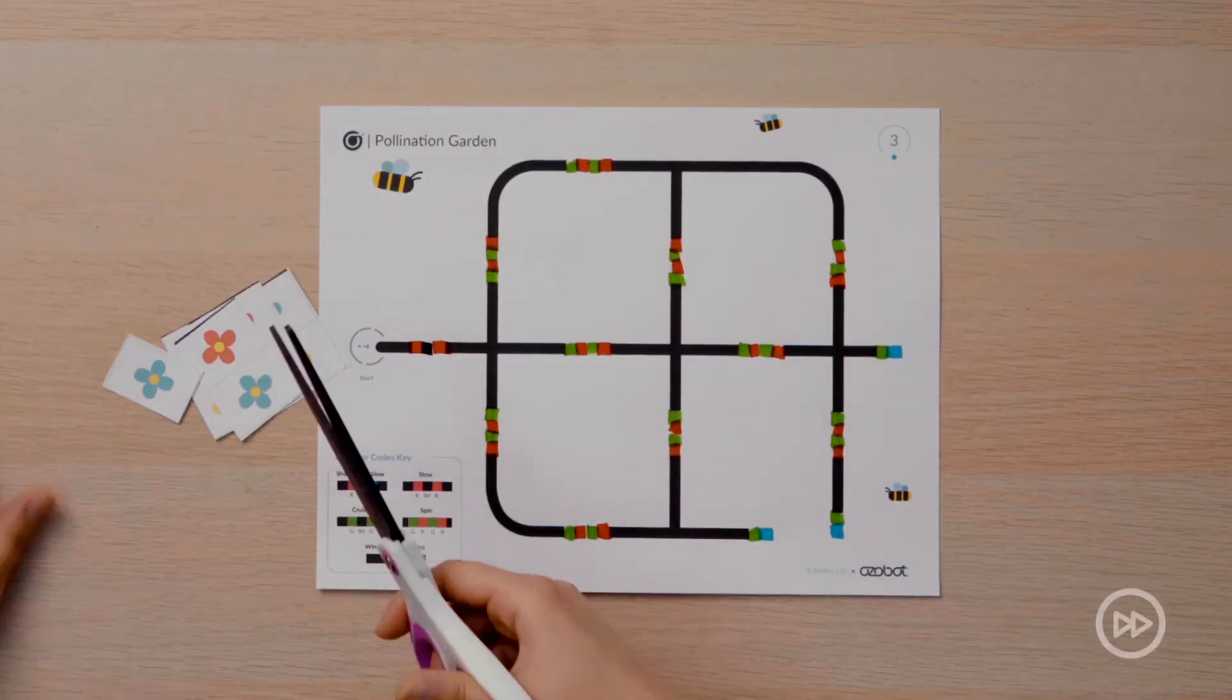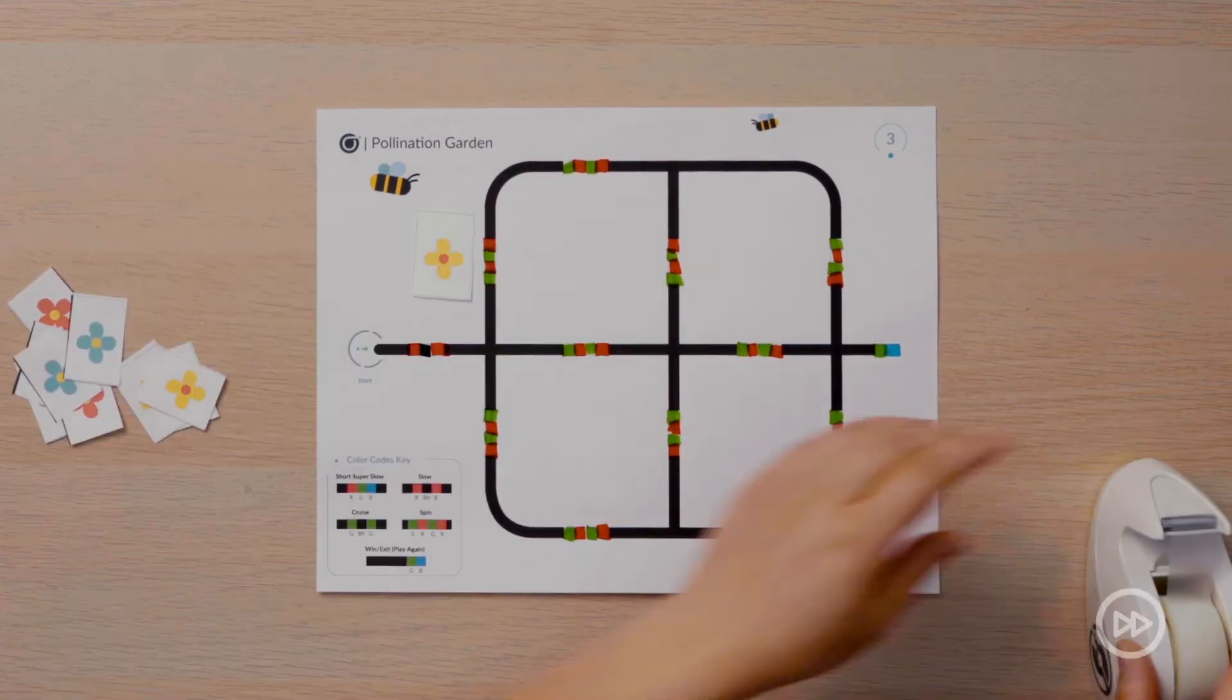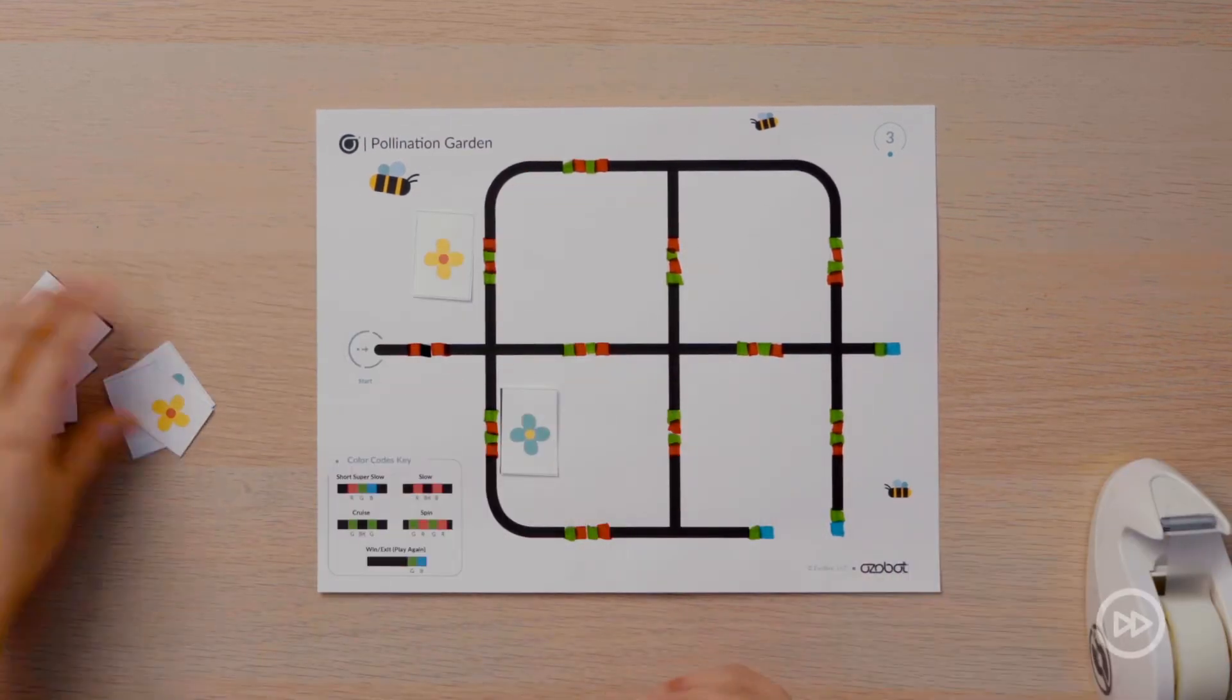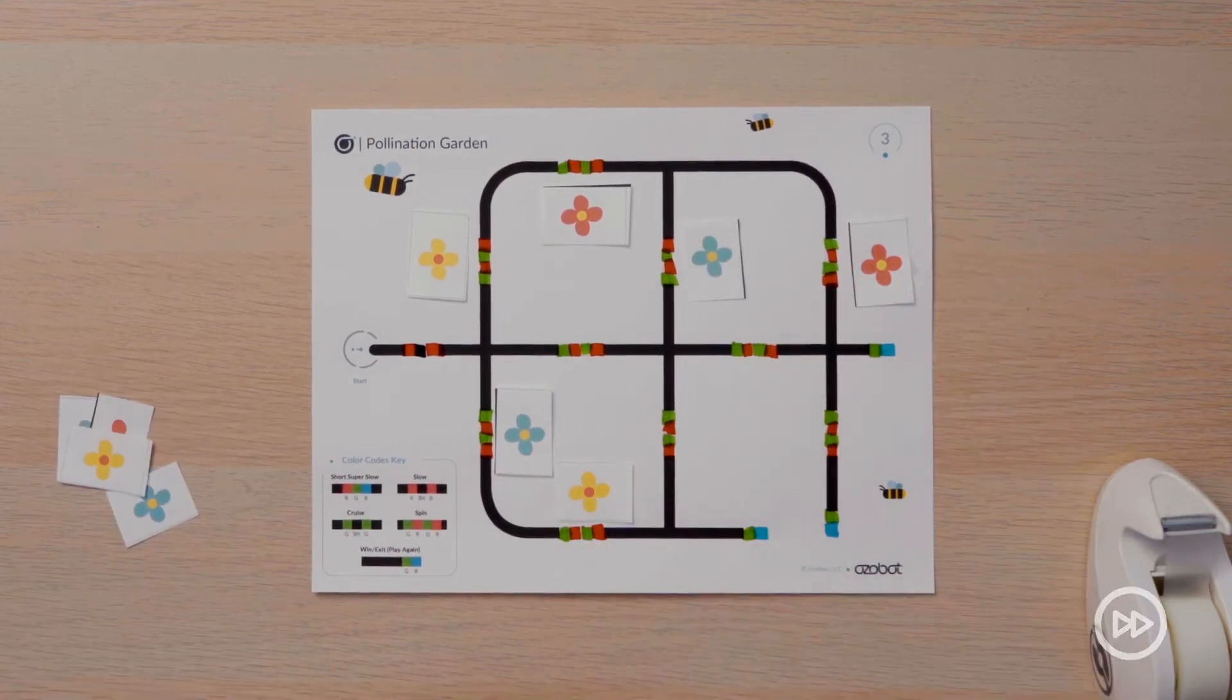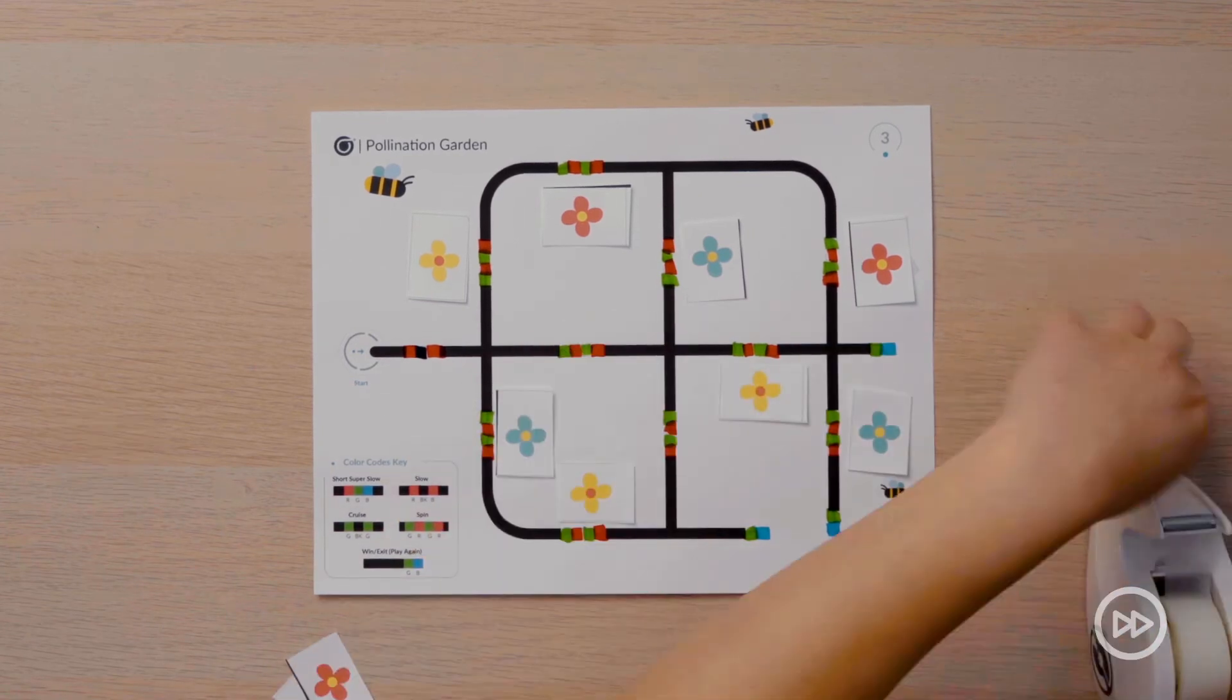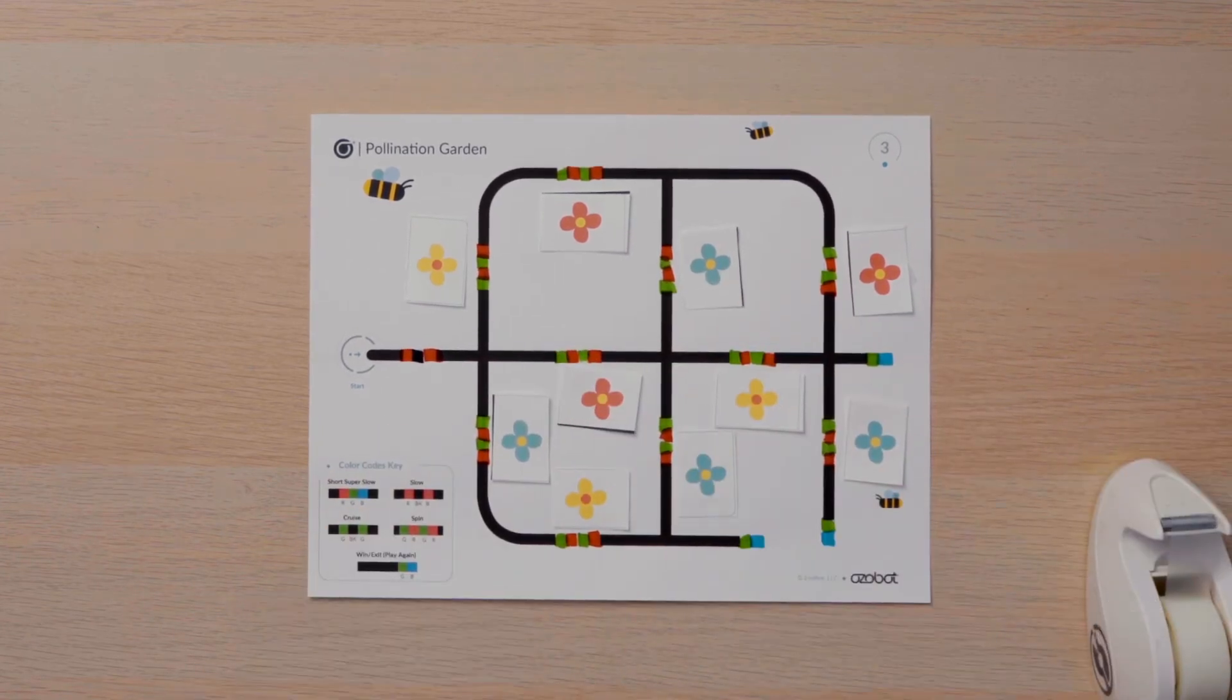After your flowers are colored, you will cut them out and tape or glue them onto your map. A flower should be placed near each spin code. Here's what my map looks like with the flowers added to it.